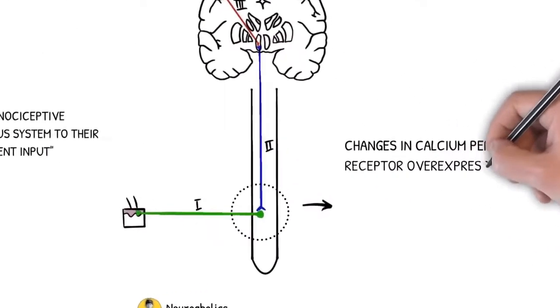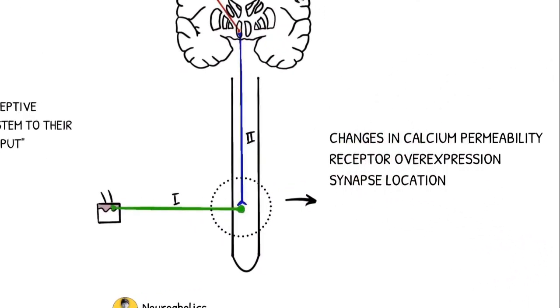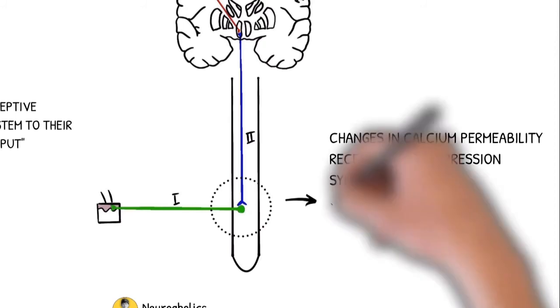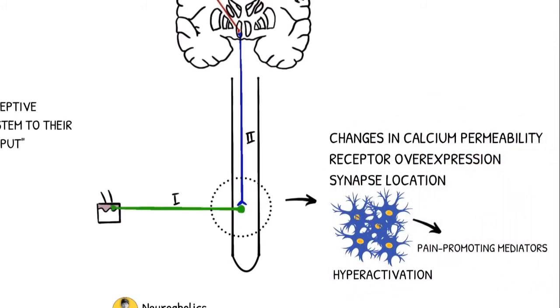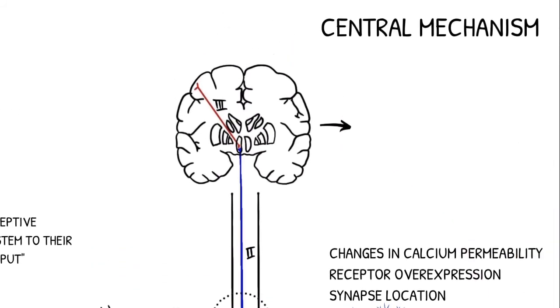Also promoting a chronic pain state are microglia, whose hyperactivation triggers the release of pain-promoting mediators. In supraspinal regions, the resulting imbalance between descending facilitation and inhibition is another major contributor to ongoing pain.